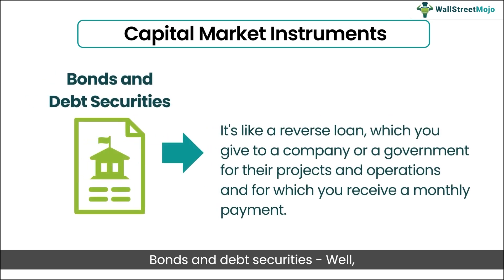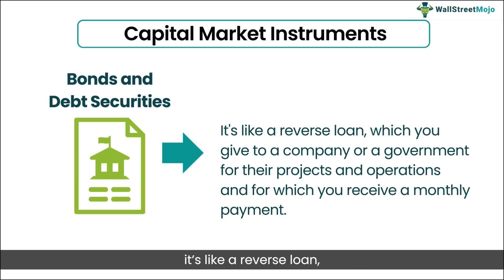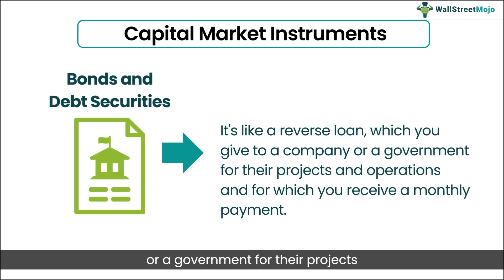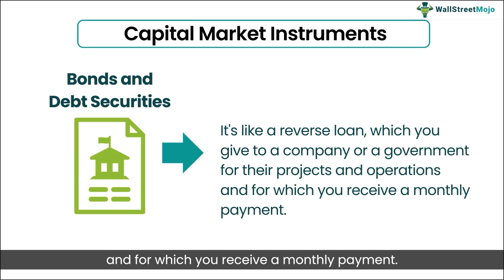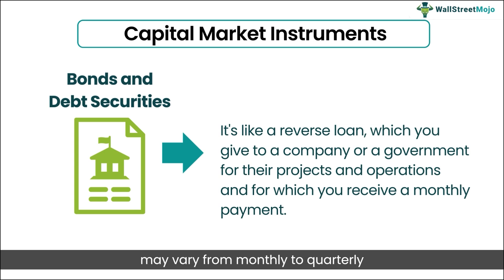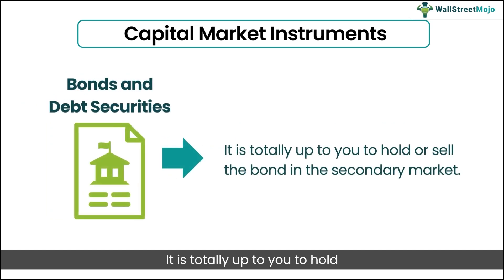Starting with the first one: bonds and debt securities. We have pretty much understood it. It's like a reverse loan, which you give to a company or a government for their projects and operations, and for which you receive a monthly payment. With different bonds, the payment intervals may vary from monthly to quarterly to even every six months. It is totally up to you to hold or sell the bond in the secondary market.